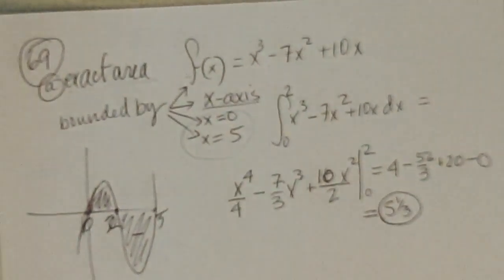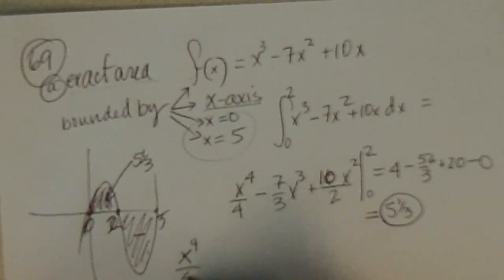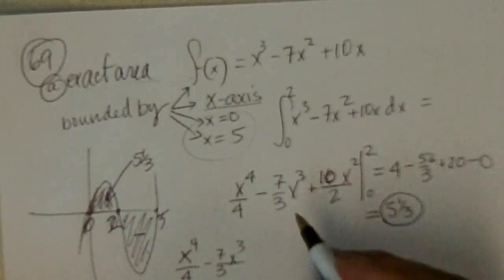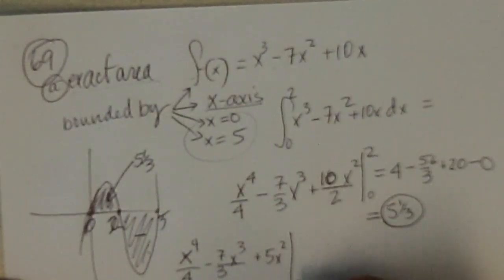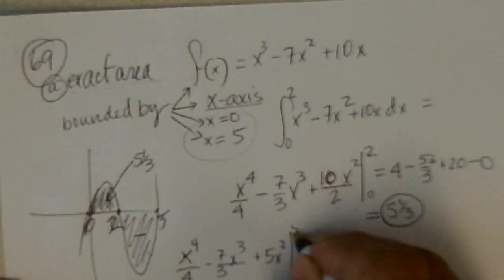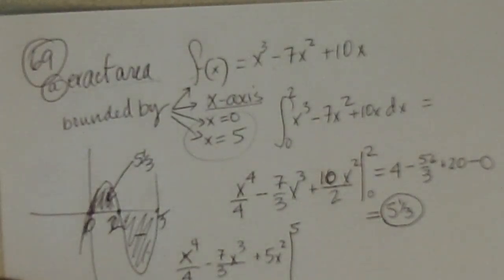Okay, so this area is 5 and 1 third. Now to find this area, I could do the anti-derivative. I would get the same thing. x to the 4th over 4 minus 7 over 3x to the third or 7x to the third over 3 plus 5x squared evaluated from 2 to 5.